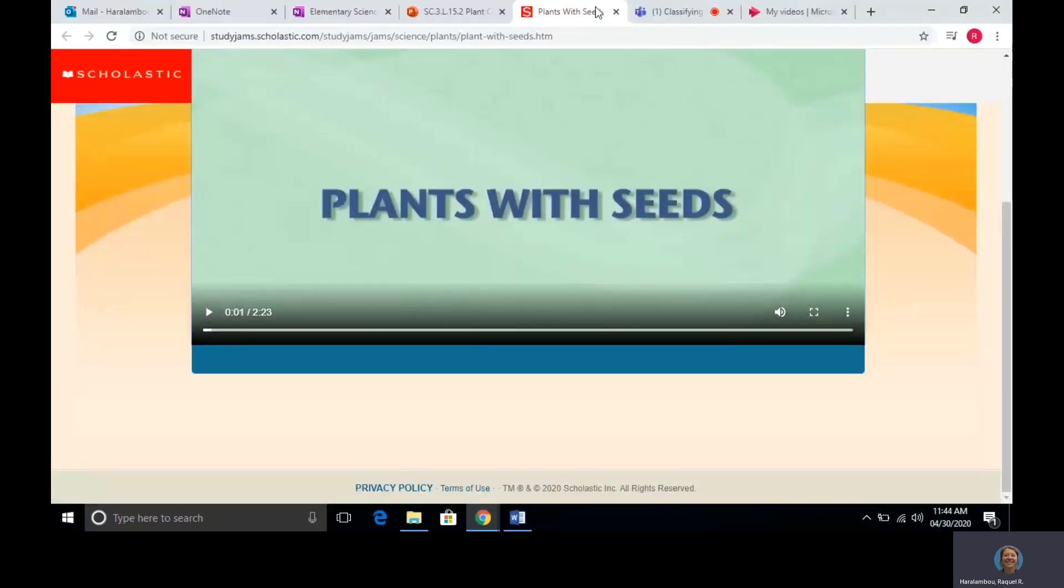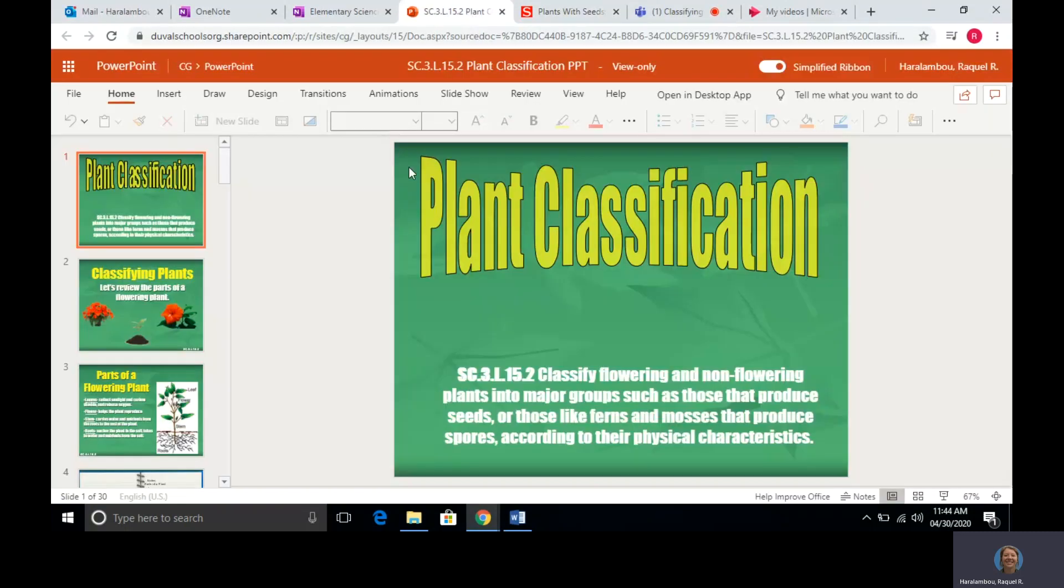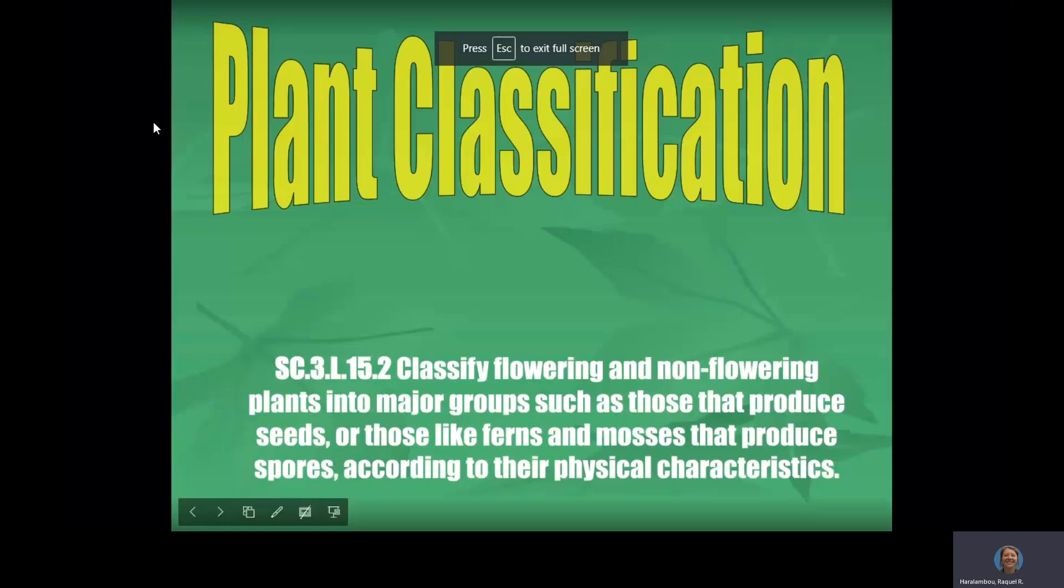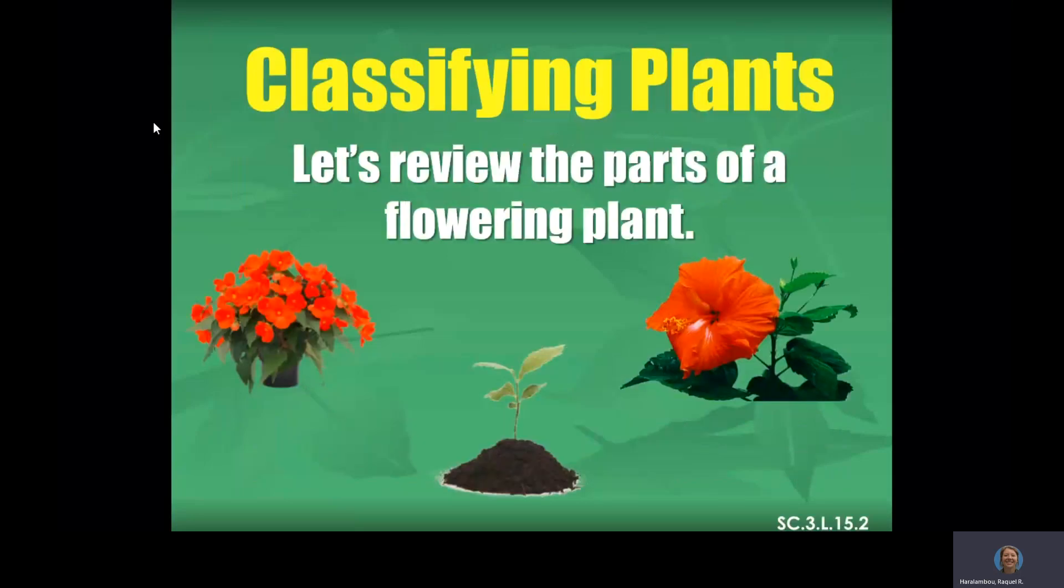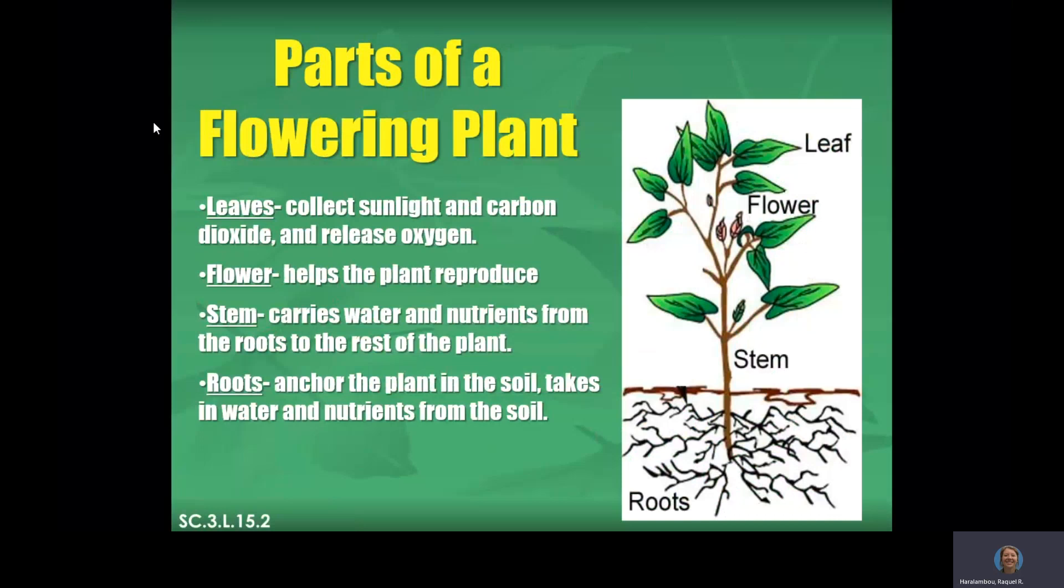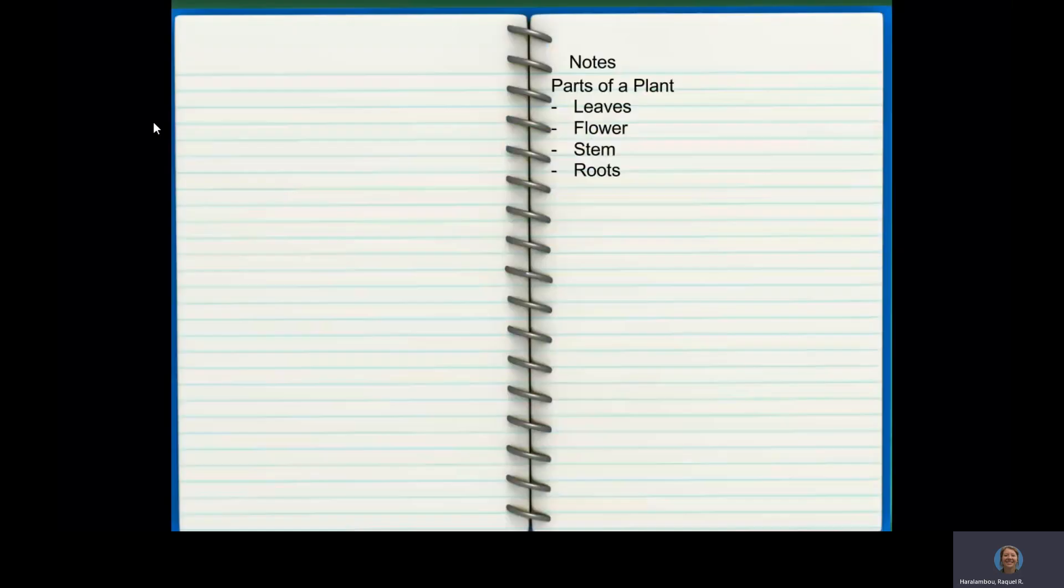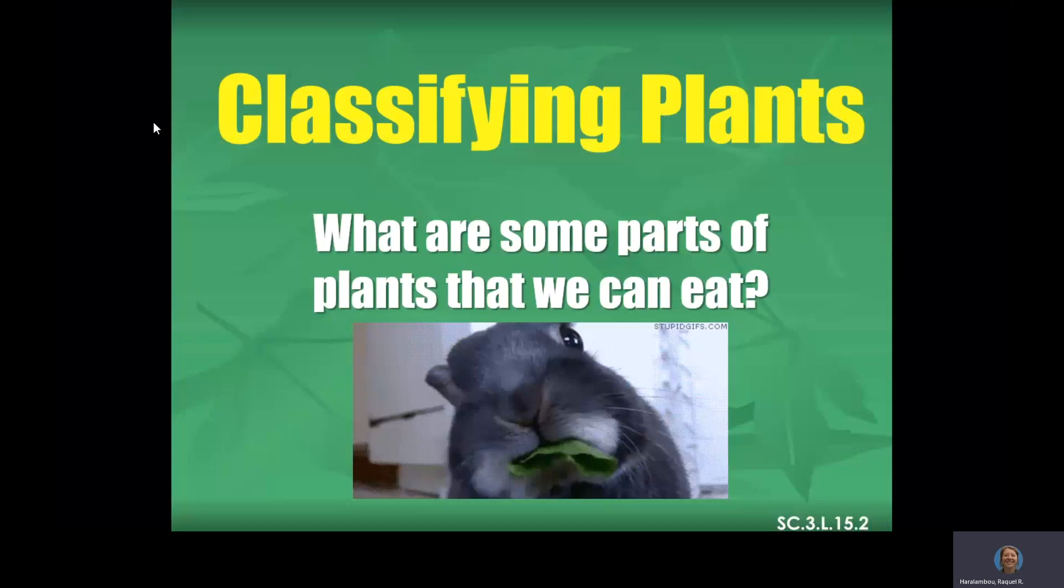All right. So we talked about plants with seeds and then plants without seeds. So the two main types of plants. So here we go. Plant classification. Classify flowering and non-flowering plants in a major group, such as those that produce seeds or those like ferns and mosses that produce spores, according to their physical characteristics. And that's what we just saw in our little video. Was it talking about the plants that produce flowers and then plants that produce fruits or spores? So here we go. So let's review the parts of a flowering plant. This is what we did two weeks ago. So we have our leaves. They collect the sunlight and carbon dioxide and they release out oxygen. The flower actually helps the plant to reproduce. We have the stem that carries water and nutrients from the roots to the rest of the plant. And then we have the roots. They anchor the plant into the soil and takes in water and nutrients from the soil. So we just went over, just reviewed the main parts of a flower.